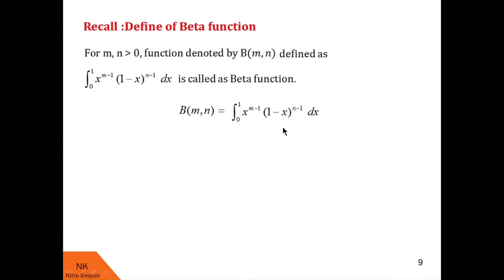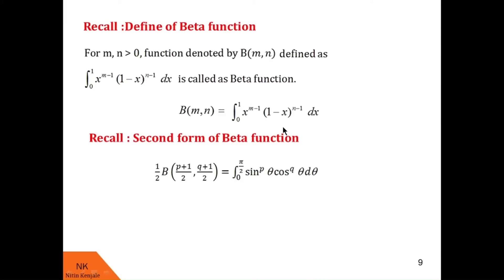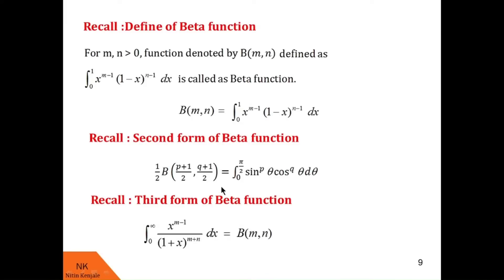If we substitute x equal to sin squared theta in this form, we get the second form of the beta function: the integral of sin raised to p theta into cos raised to q theta d theta over the limit 0 to pi/2 equals half beta of (p+1)/2 comma (q+1)/2. Similarly, the third form of the beta function is the integral of x raised to m minus 1 upon 1 plus x raised to m plus n dx over the limit 0 to infinity.